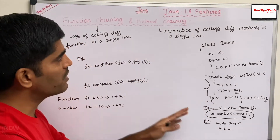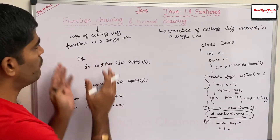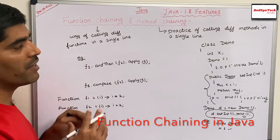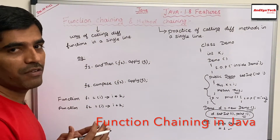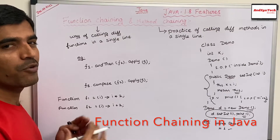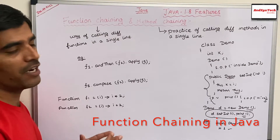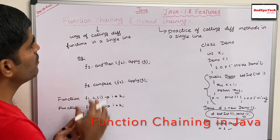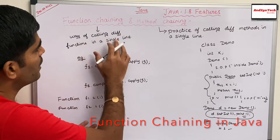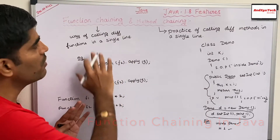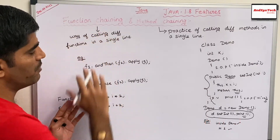Now let's move into function chaining with respect to functional interfaces. Whenever we create functional interfaces, we can call multiple functional interfaces in a single line of code. That is what function chaining means.